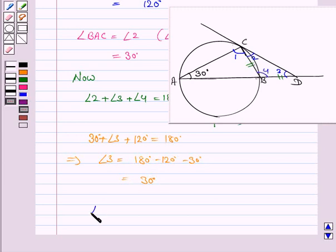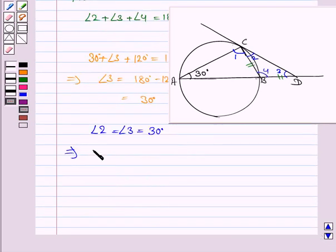We have got that angle 2 is equal to angle 3 is equal to 30 degrees. And by the property of isosceles triangle, sides opposite the equal angles are equal. So this implies BC is equal to BD.